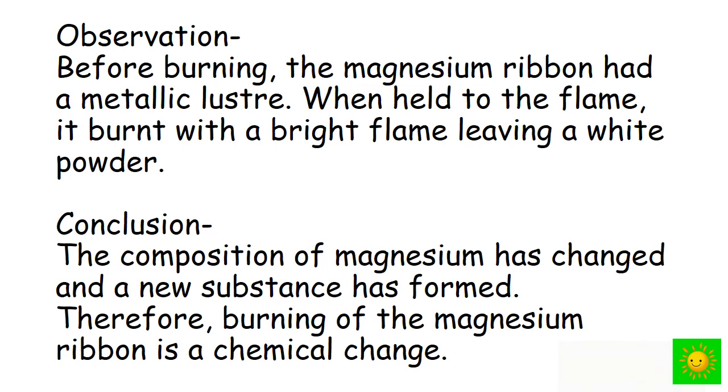Before burning, the magnesium ribbon had a metallic structure. When held to the flame, it burned with a bright flame, leaving a white powder. Conclusion of this practical, the composition of magnesium has changed and new substances have formed. Therefore, burning of magnesium ribbon is a chemical change.